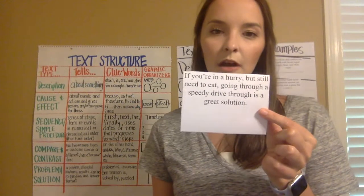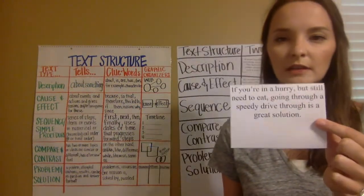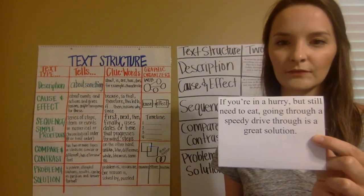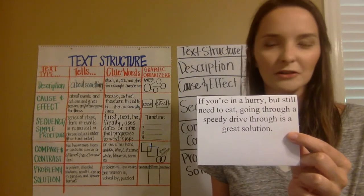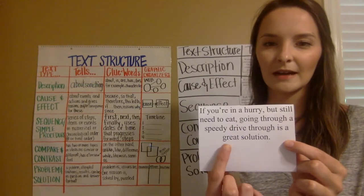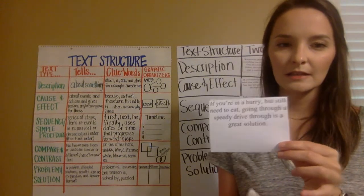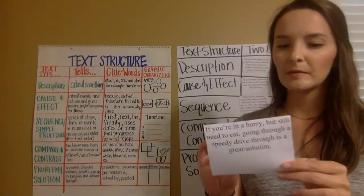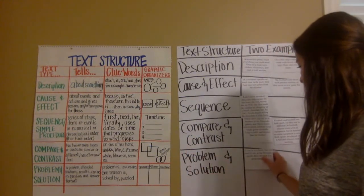Next card: If you're in a hurry but still need to eat, going through a speedy drive-thru is a great solution. There's a nice clue word in there — solution. That word tells us this is problem and solution. The problem is you're in a hurry but you're hungry, and the solution is just go through a drive-thru.